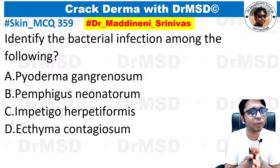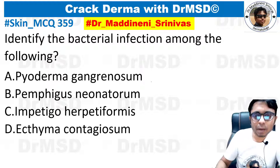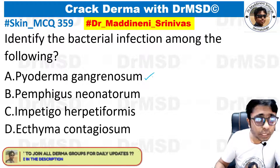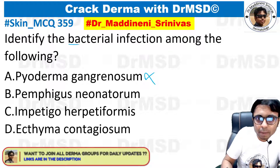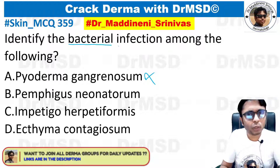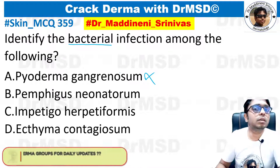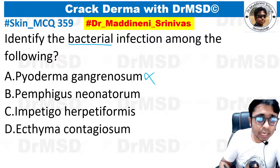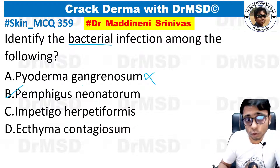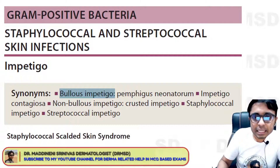This is the most confusing question, and also the one with the most wrong answers marked by students. The wrong answer was obviously option A. You need to identify the bacterial infection — this may look like a one-liner type of question, but there is a lot in the options which you have to know. The answer for this question is pemphigus neonatorum.